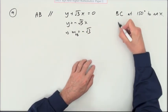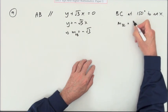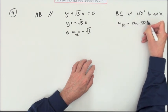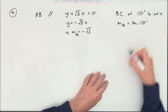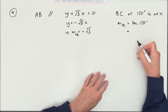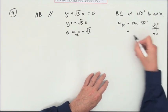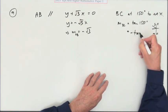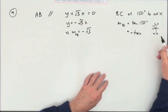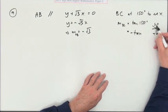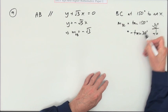This one here, the gradient of BC would be the tangent of 150°. Now, the tangent of 150°, if you use your all-sine-tan-cos rule, puts it into a negative part, so it's going to be the negative of the tan of 30°.